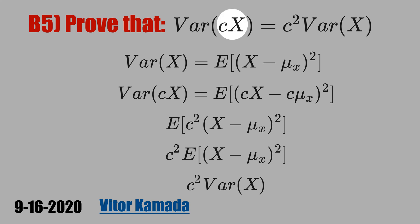This formula is telling us that if you multiply a random variable X by a constant, the original variance is multiplied by the square of the constant.